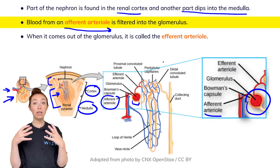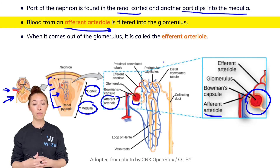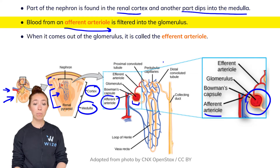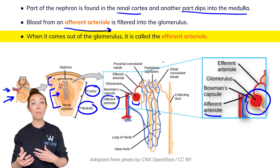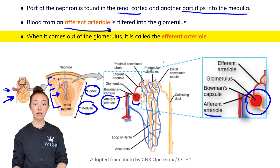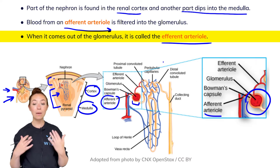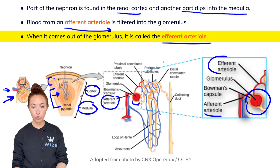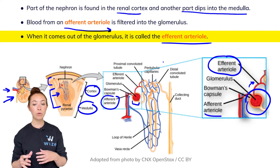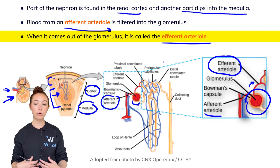It is in the glomerulus that fluids present in the blood flowing through those capillaries get filtered into the nephron and then processed. Blood from the afferent arteriole is filtered into the glomerulus, and when that arteriole comes out of the glomerulus, we call it the efferent arteriole. So afferent goes to the glomerulus and efferent comes out. Keep those in mind — we'll reference them throughout these lessons, so having a general understanding of this anatomy is important.